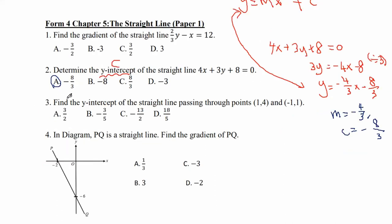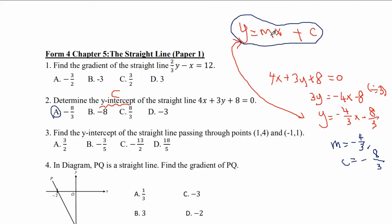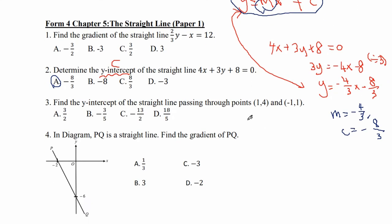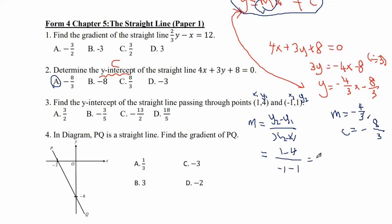Number 3: find the y-intercept of the straight line passing through points (1, 4) and (negative 1, 1). We have to form the equation using these two points. Remember y equals mx plus c — we need to find m first. Let x1, y1 be (1, 4) and x2, y2 be (negative 1, 1). Gradient = (y2 minus y1) over (x2 minus x1) = (1 minus 4) over (negative 1 minus 1) = negative 3 over negative 2 = 3 over 2.